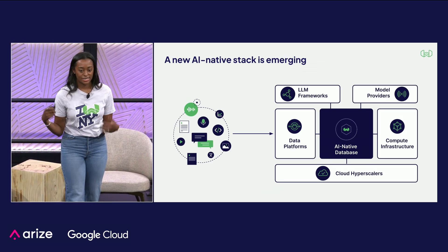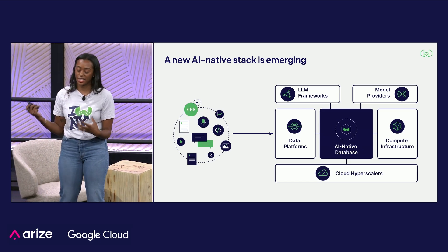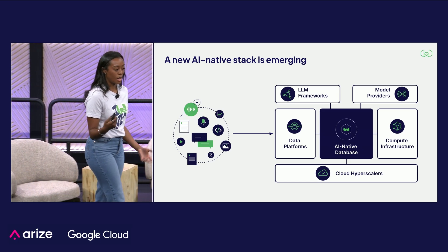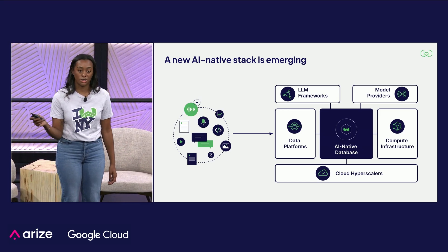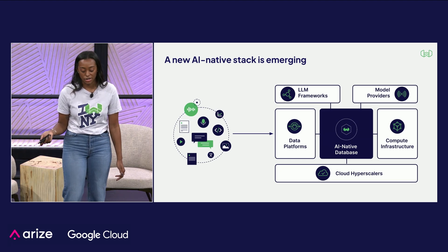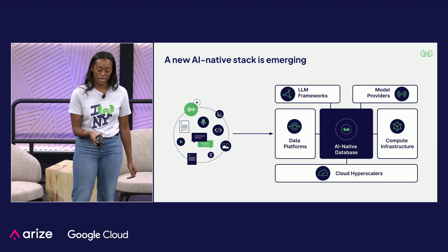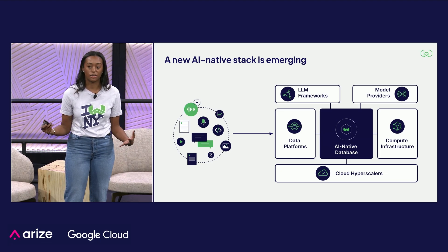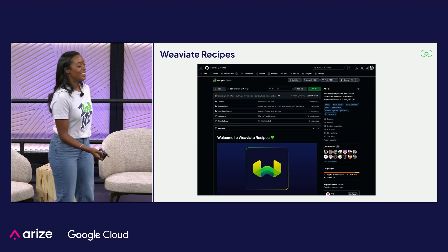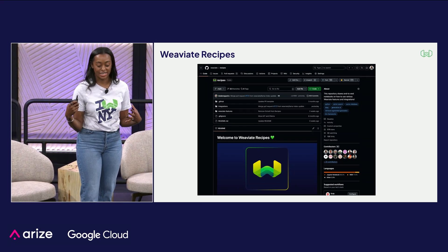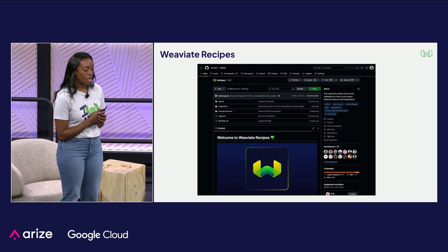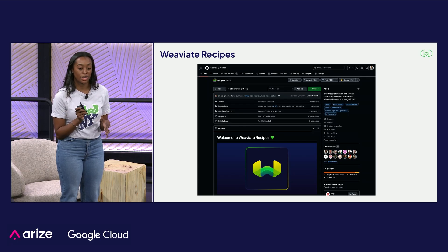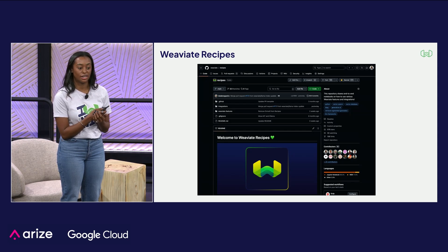At Weaviate, we have a similar stack for what it means to build an AI-native application. You have your vector database, your data platform for getting data into Weaviate, your frameworks, model providers, compute infrastructure, and cloud hyperscalers like Google to build these kinds of applications. One way to explore this ecosystem is through Weaviate Recipes. It covers not only Weaviate features but also integrations — LLM frameworks and other subsections of the AI-native app stack.